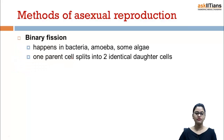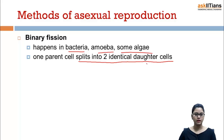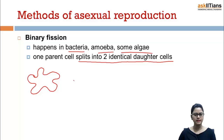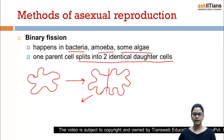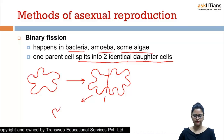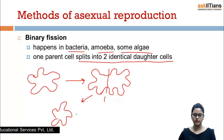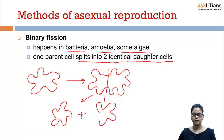What is binary fission? Binary fission happens in bacteria, amoeba, and some algae. One parent cell splits into two daughter cells which are identical. For example, this is an algae — it's a very basic example. There will be division of this algae and it will give rise to two identical daughter cells by splitting. So this is known as binary fission.